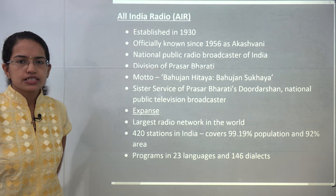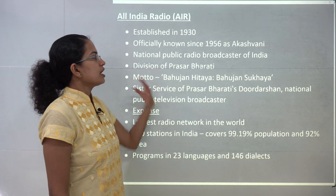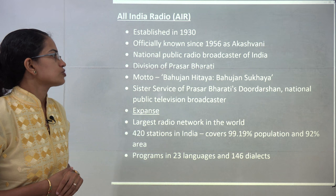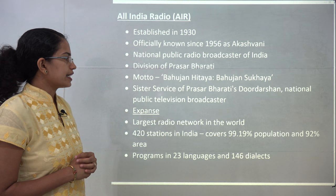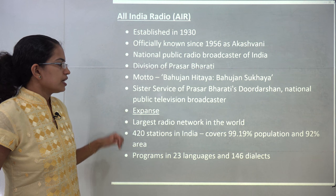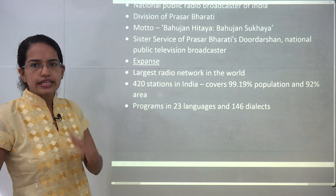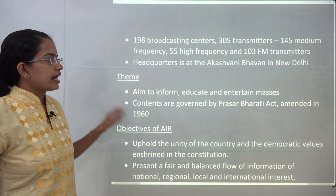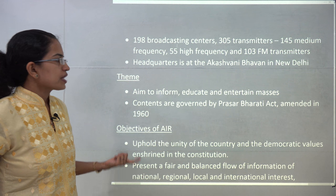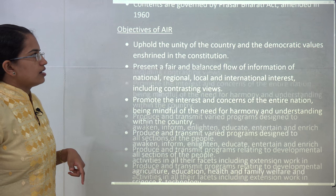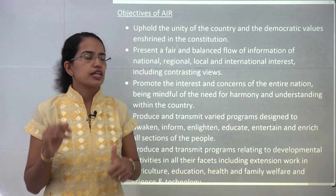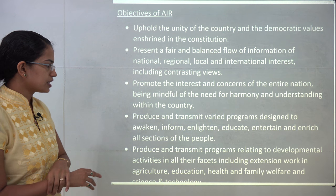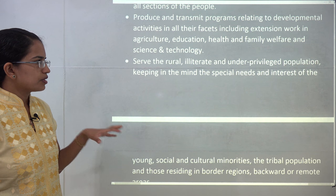All India Radio was established in 1930, and in 1956 it was named Akashvani. Its motto is 'Bahujan Hitay Bahujan Sukhay,' meaning reaching and benefiting the maximum number of people. It comes under Prasar Bharati, and is a sister service of Prasar Bharati's Doordarshan. It is the largest radio network in the world, with 420 stations covering 99% of the population and 92% of the area, providing programs in 23 languages and 146 dialects. It comes under the Prasar Bharati Act, and its objectives include upholding national unity, creating a balanced flow of information, promoting understanding within the country, and reaching rural, illiterate, and underprivileged people.